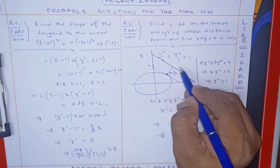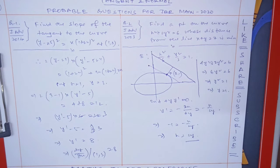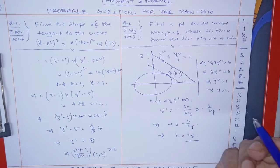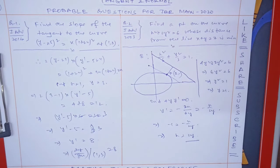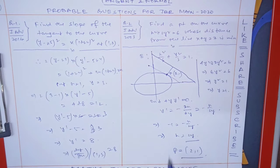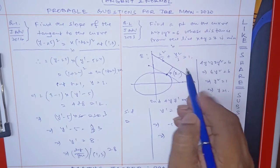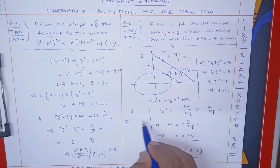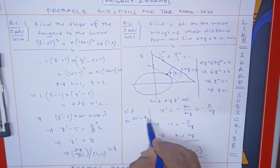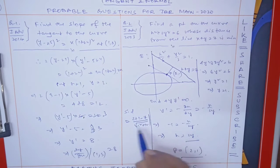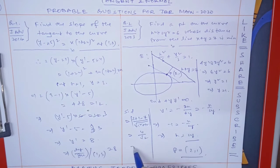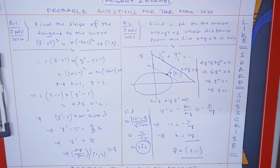Now the length of perpendicular — the minimum distance is asked. So the point P has coordinates (2, 1). If shortest distance from P to the line x + y = 7 is needed, it is the perpendicular distance: (2 + 1 − 7) / √(1² + 1²) = −4 / √2 = 4/√2. So the shortest distance is 2√2.